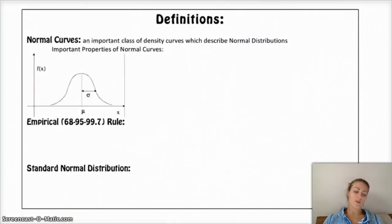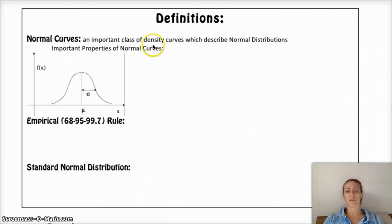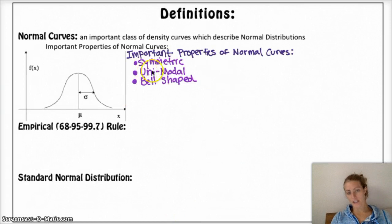Normal curves are just a special kind of density curve, and the important properties of a normal curve is that it's symmetric, which means the mean and the median are smack dab in the middle. It's a density curve, so the area underneath it is 1, or 100%, and that just means that 100% of the data lies underneath the curve. Additionally, it always is unimodal, so one mode, and bell-shaped.